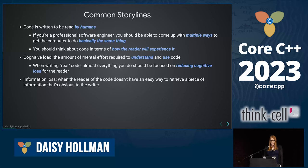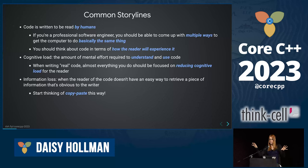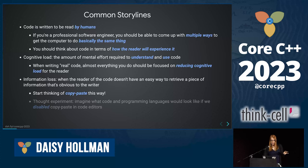I'm also going to talk about information loss, which is when the reader of the code doesn't have an easy way to retrieve a piece of information that's implicit or obvious to the writer. The most common version of this is copy and paste. When you copy and paste something, you have a piece of information in your head — a connection between the code you copied from and the code you pasted. That connection isn't preserved in your repository or the source code. I think it's interesting to do this thought experiment where we look at code as if copy-paste didn't exist.